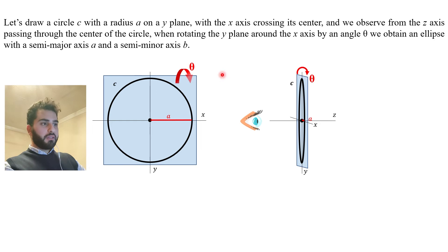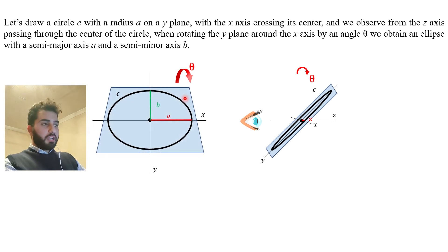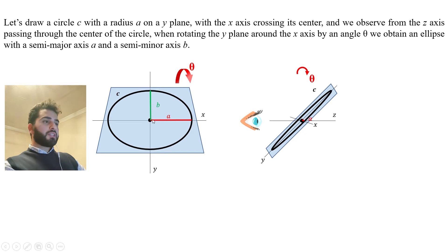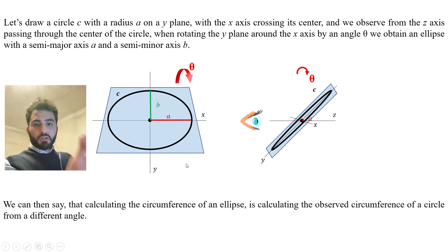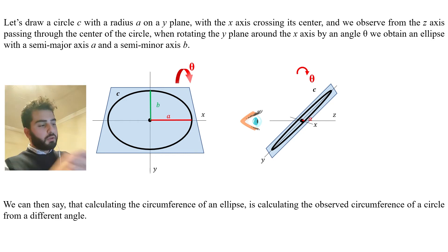What we will do is tilt or rotate the y-plane by an angle theta around the x-axis. By doing so, the circle c becomes an ellipse with a semi-major axis a and a semi-minor axis b. This is exactly how I'm going to approach this problem: calculating the circumference of an ellipse is equivalent to calculating the observed circumference of a circle from a different angle.